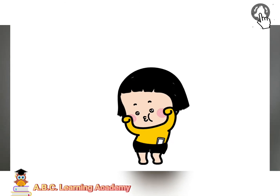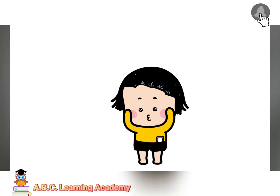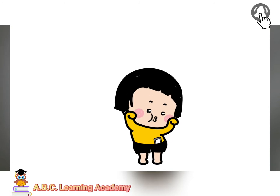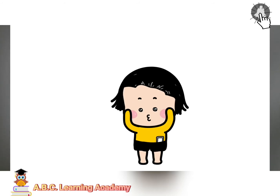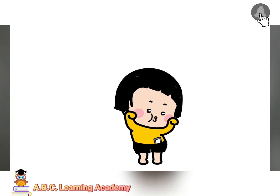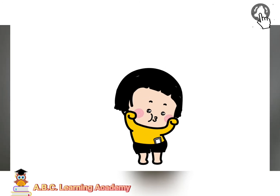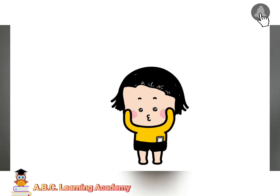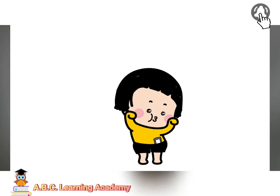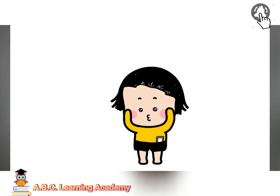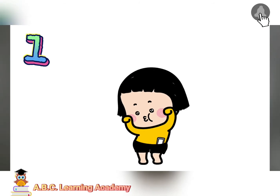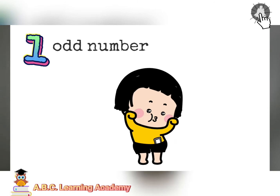Look at this clip. What can you see? You're right! There is one child dancing, and she is alone. She doesn't have any partner. Therefore, one is an odd number.